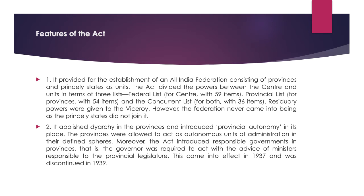However, the federation never came into being as the princely states did not join it. The second feature is that it abolished dyarchy in the provinces and introduced provincial autonomy. In its place, the provinces were allowed to act as autonomous units of administration in their defined spheres. Moreover, the act introduced responsible government in provinces — that is, the governor was required to act within the advice of the ministers responsible to the provincial legislature. This came into effect in 1937 and was discontinued in 1939.